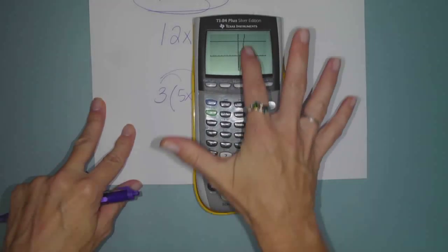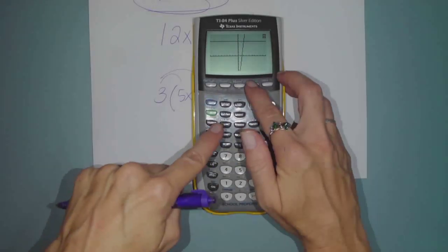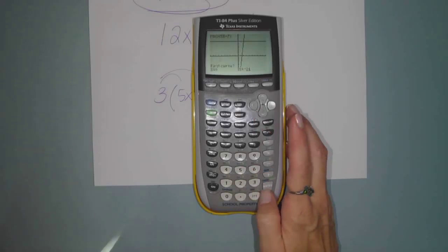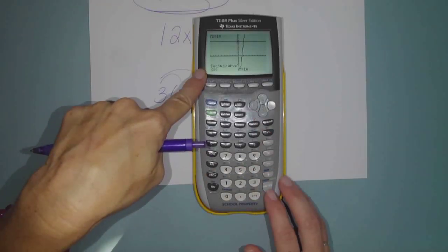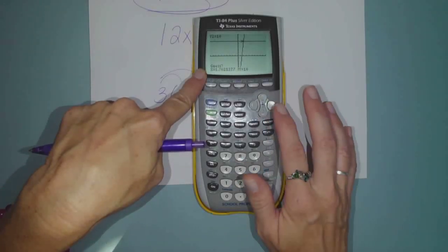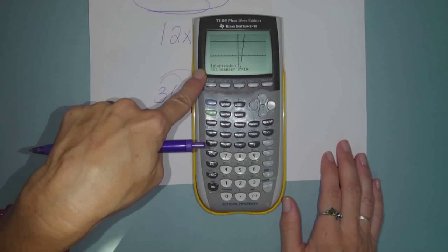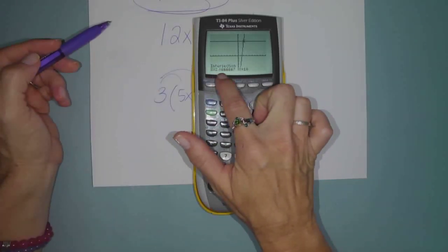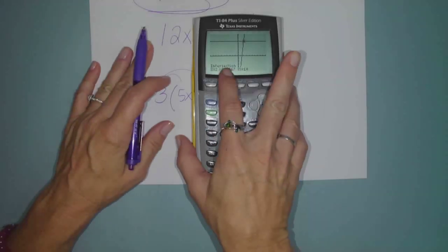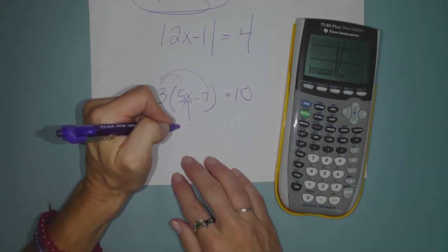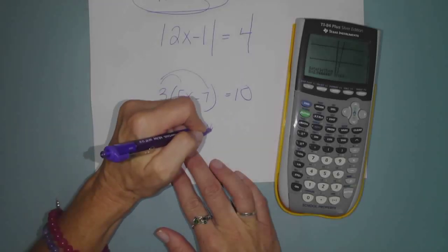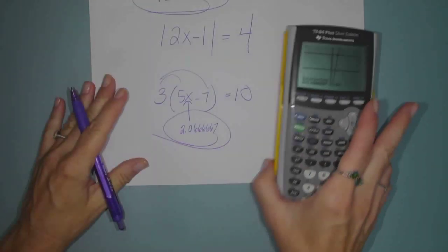So in order to find that intersection, I just do second trace. Come down to intersect. First curve. Yep. Second curve. Yep. Plop this cursor down on the intersection point. And look what I get. x equals 2.0666667. So that would be the value of x, 2.0666667. And we could check it.